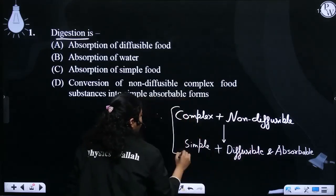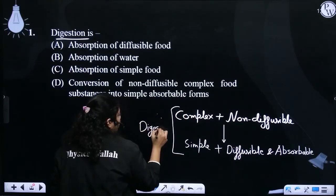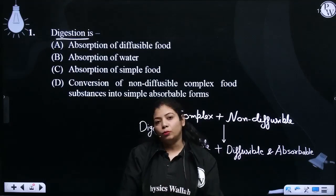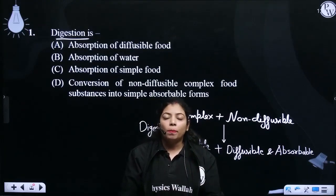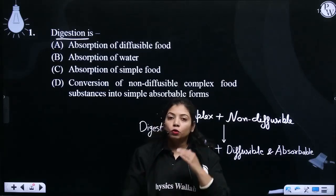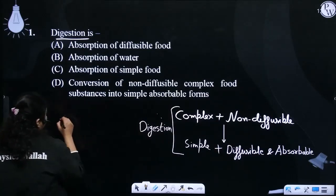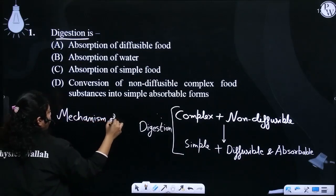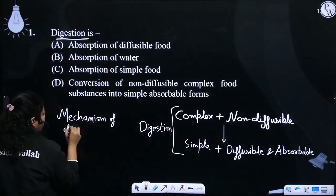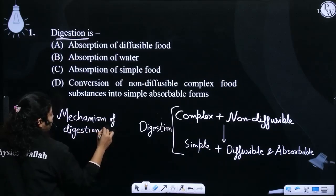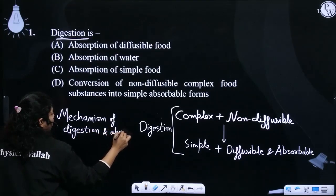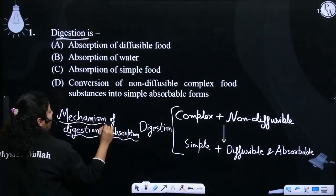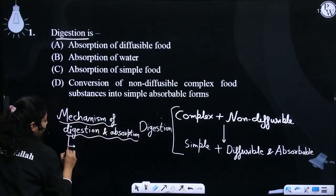The process of digestion, if we talk about the mechanism of digestion and absorption — your whole chapter, which is the digestive system — we have divided the process of digestion into 5 parts, depending on the result of digestion.